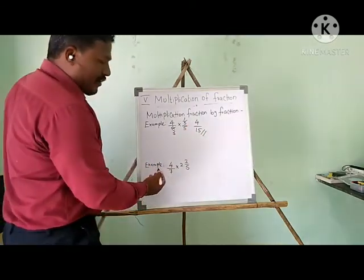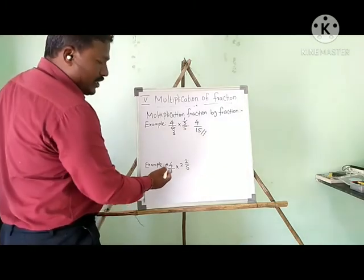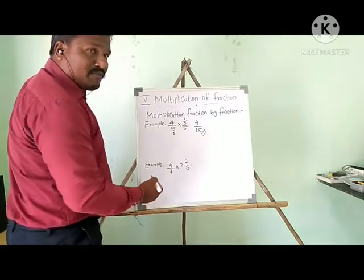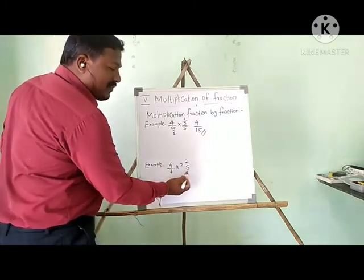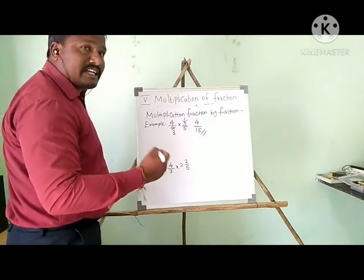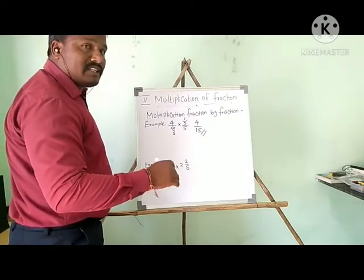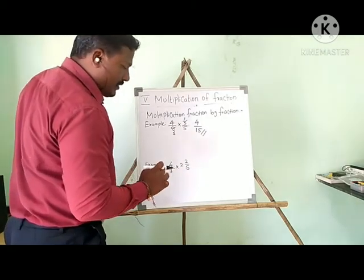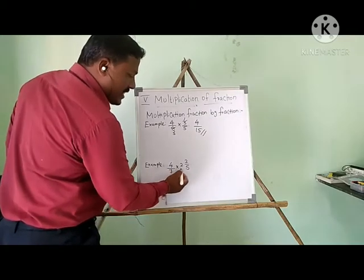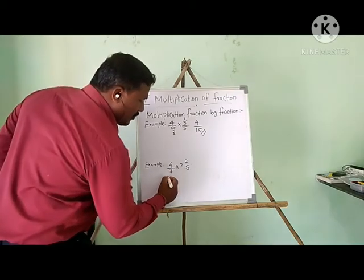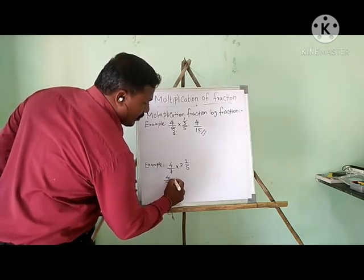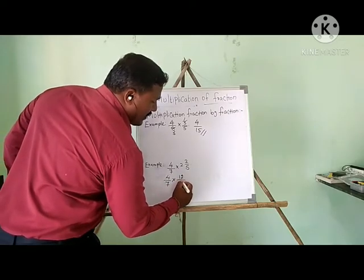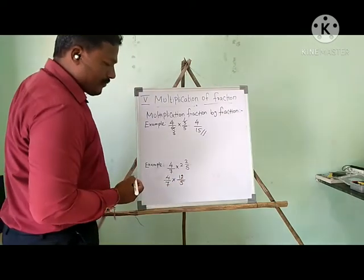Now, this kind of fraction is a mixed fraction. For example, 4/7 multiplied by 2 and 2/5 — both are mixed fractions. If you have this kind of fraction, first cross multiply the mixed fraction, then take the LCM, then convert the denominator, then multiply both fractions. Don't be confused; I will do it step by step. First I cross multiply: 4/7 multiplied by (2 × 5 = 10, plus 2 = 12) upon 5. So we get 4/7 × 12/5.